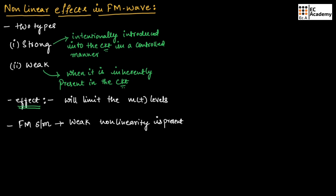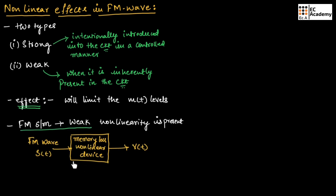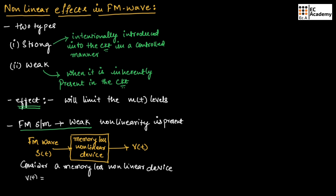To understand the non-linearity in FM system, let us consider a memoryless non-linear device for which the FM wave will be the input that will produce the output V of t. We know that we can relate input and output in a memoryless system as: V(t) = A1·S(t) + A2·S²(t) + A3·S³(t) + ... Let us consider this as equation number 1. This is the output of a non-linear system when the input is FM wave.